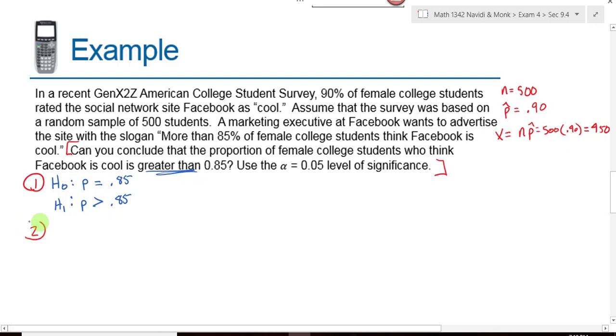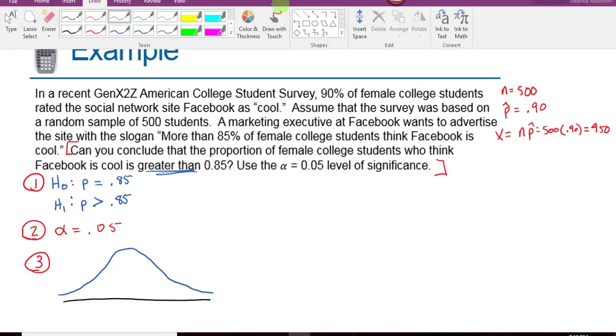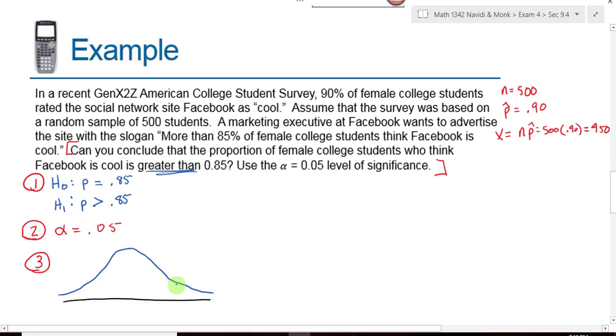Next, we identify what our significance level is. Alpha is equal to what? And then we draw a picture. Proportions use the normal distribution, so I'm back to drawing a normal curve. Will this be a left tail, right tail, or two tail test? Right tail, so my alpha level is all going to be over here on the right. This area is 0.05. That means my critical value is 1.645.